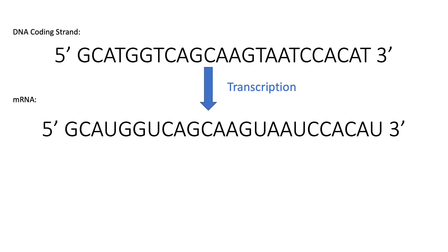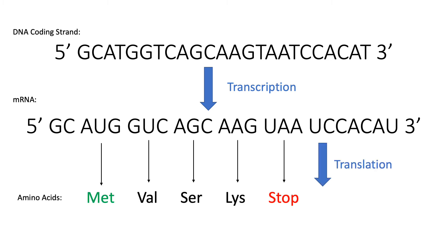After transcribing the mRNA from the now established coding strand, the student must take the mRNA through translation to determine the four amino acids that form the protein. It translates AUG to methionine (the start codon), GUC to valine, AGC to serine, and AAG to lysine, which is followed by the stop codon of UAA.